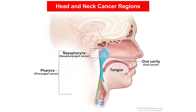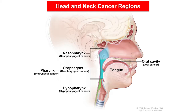Nasopharyngeal cancer develops in the upper part of the throat behind the nose, called the nasopharynx. Oropharyngeal cancer can start at the base of the tongue, at the back of the roof of the mouth, in the tonsils, and in the side and back walls of the throat, called the oropharynx. Hypopharyngeal cancer develops in the bottom part of the throat, called the hypopharynx.